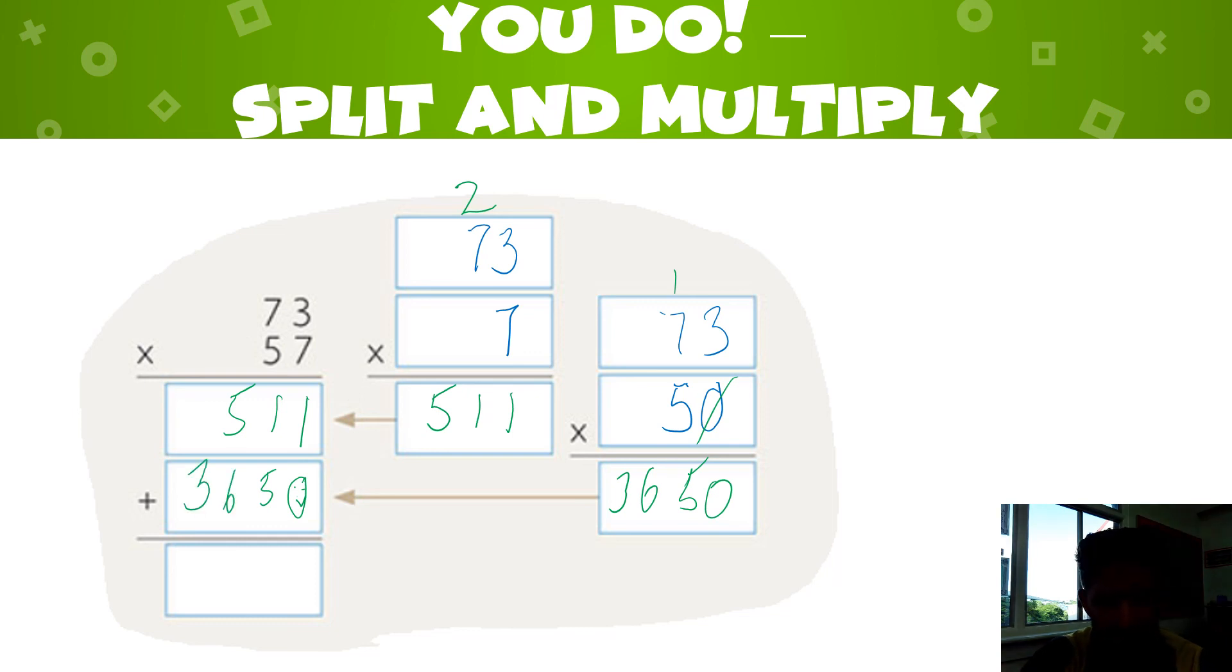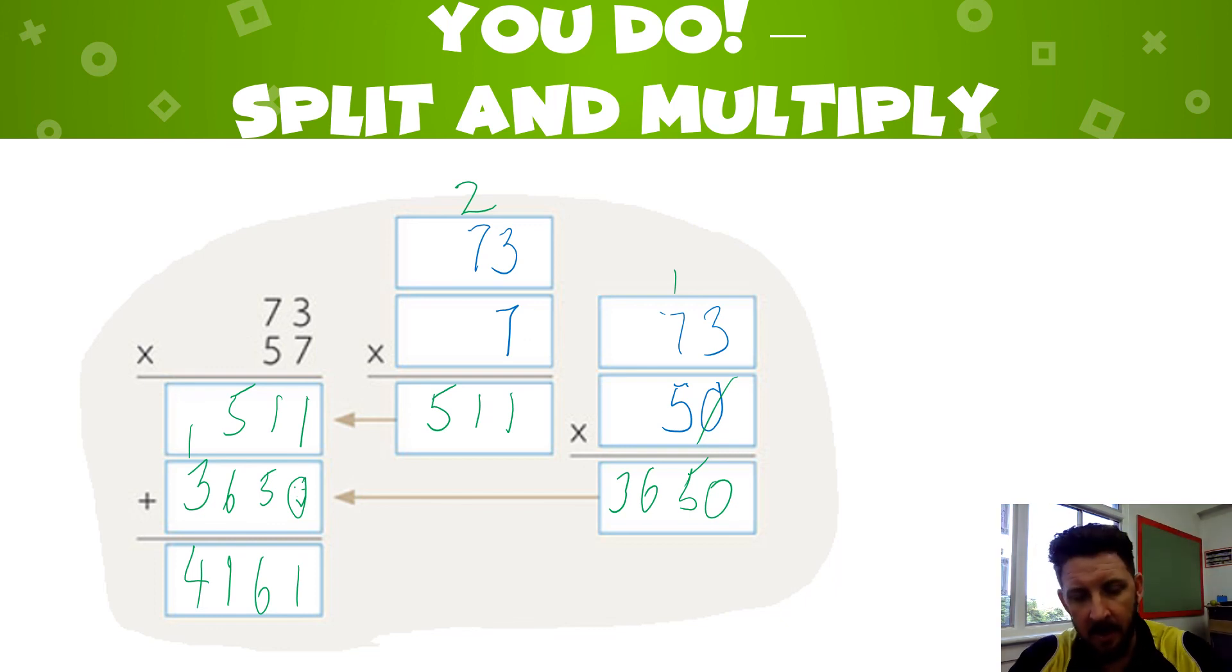Let's write it all in, making sure I'm lining up my place values. Okay, let's go through. 1 plus 0 is 1, 5 plus 1 is 6, 5 plus 6 is 11, we regroup. 4 and 1, 3 and 1 is 4. So I get 4161. Going through what we did again, we split up the ones and the tens, we make sure we use the zero multiplying by zero rule.